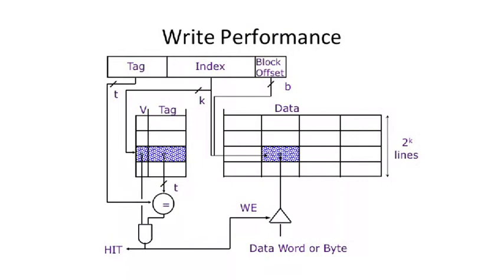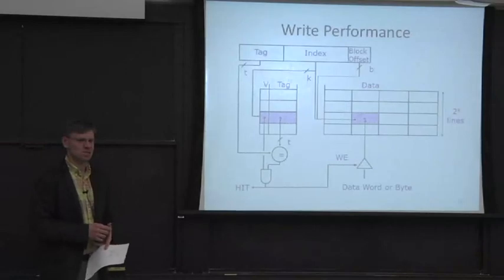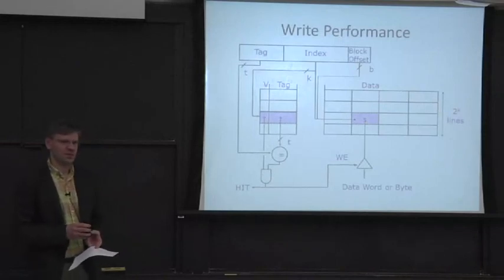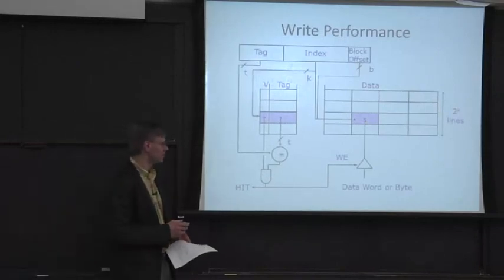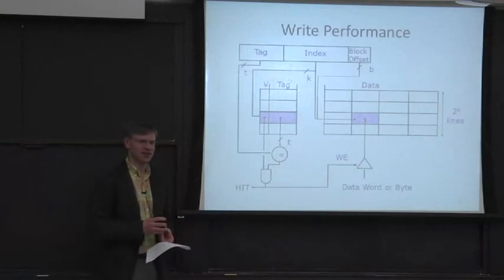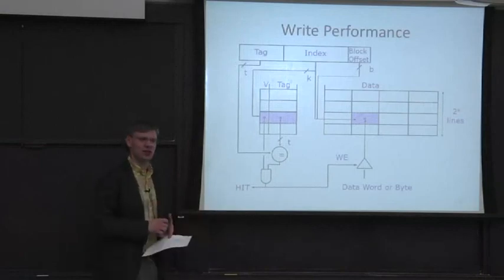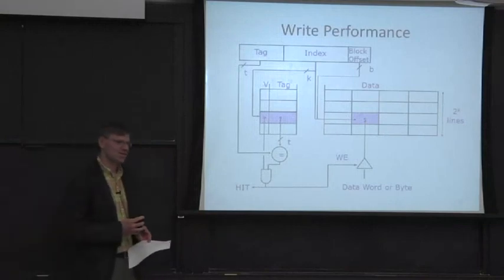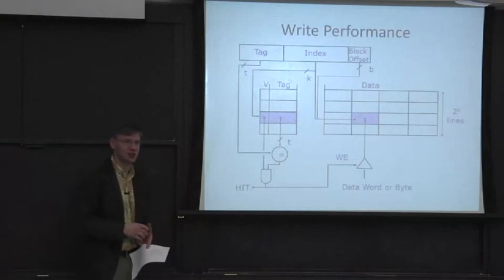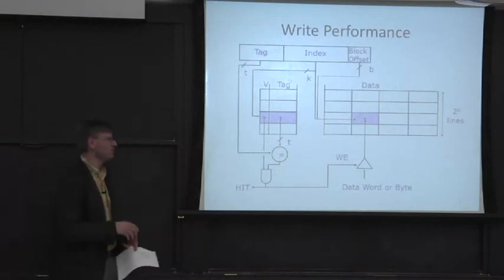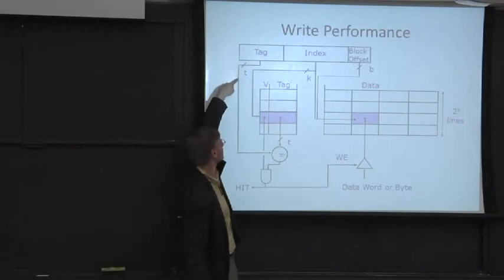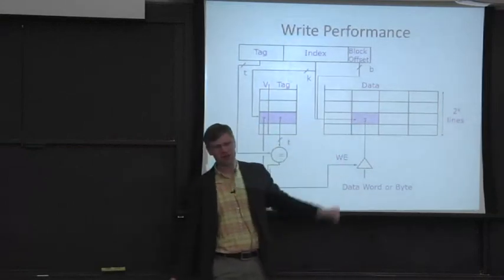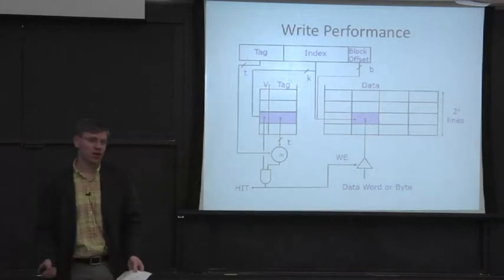Do we think we want to try to do this in one cycle? Do people build machines where they do this in one cycle? Well, sure. Original machines did do this in one cycle — it's possible to build. You have a nice combinational path that comes out of the index, through all this logic, and then through the write enable. It's buildable, but not great for your clock performance.